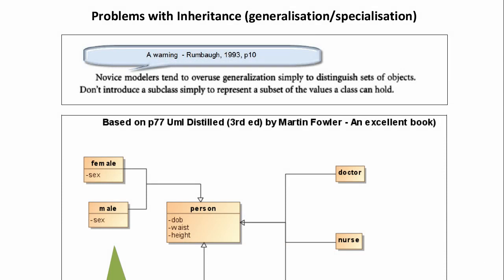Let's start with a quote from Rambo, who was one of the main developers of UML. In 1993 he said novice modelers tend to overuse generalization simply to distinguish sets of objects. Don't introduce a subclass simply to represent a subset of the values a class can hold.